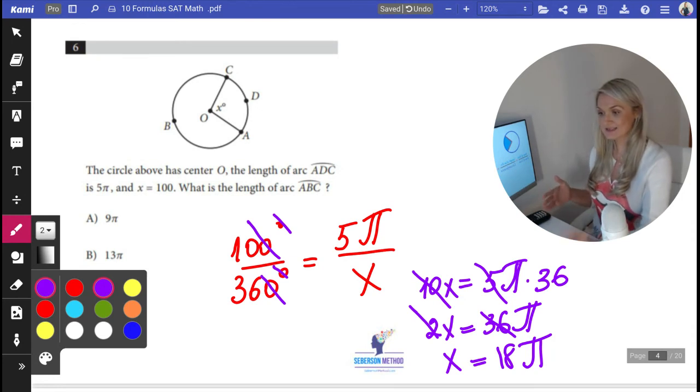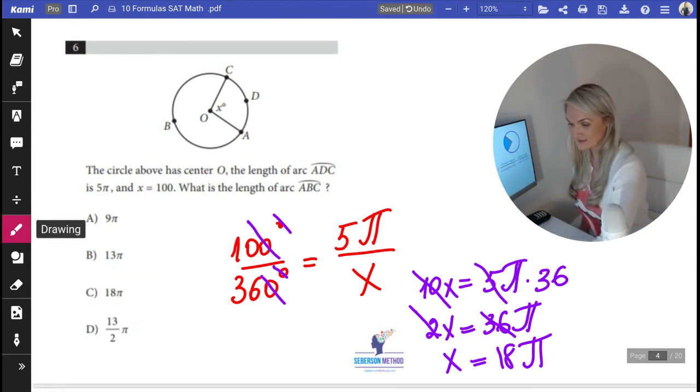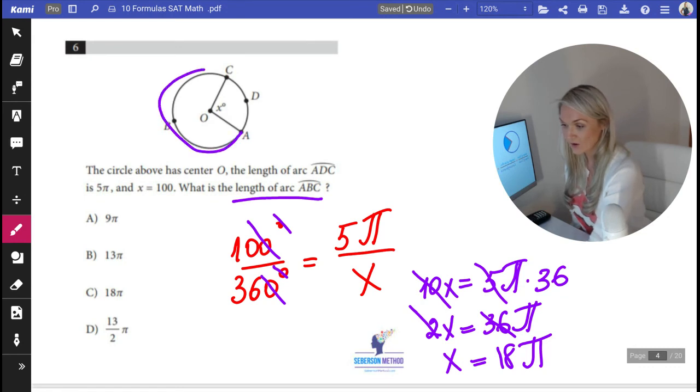18π is the whole circumference, and obviously the SAT is going to give it to us as an answer choice. But that's a trap because what they're asking is the arc length from here all the way to here.